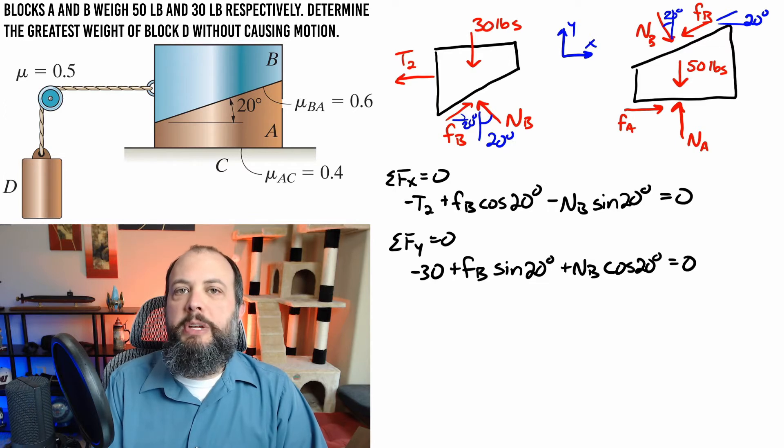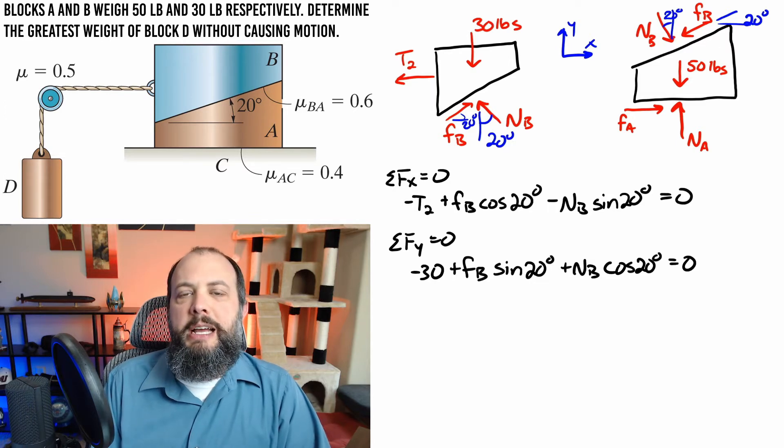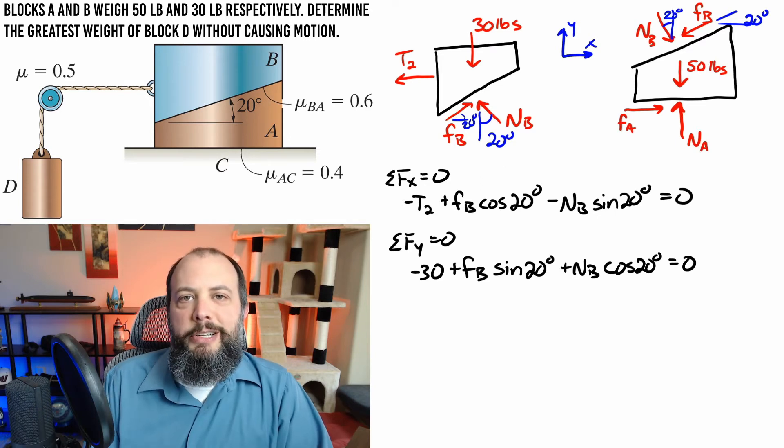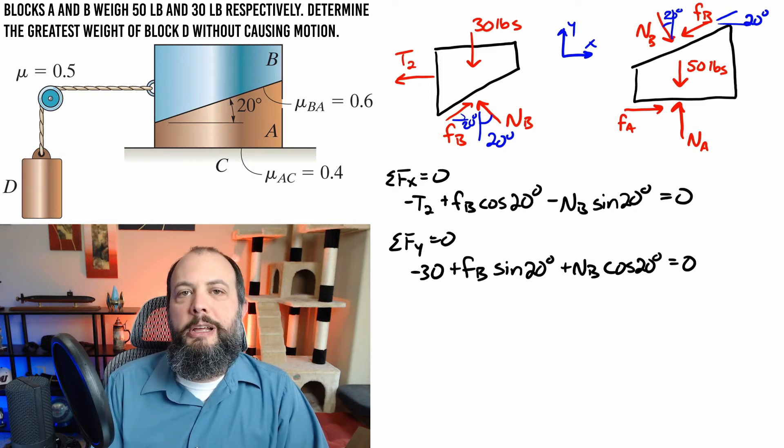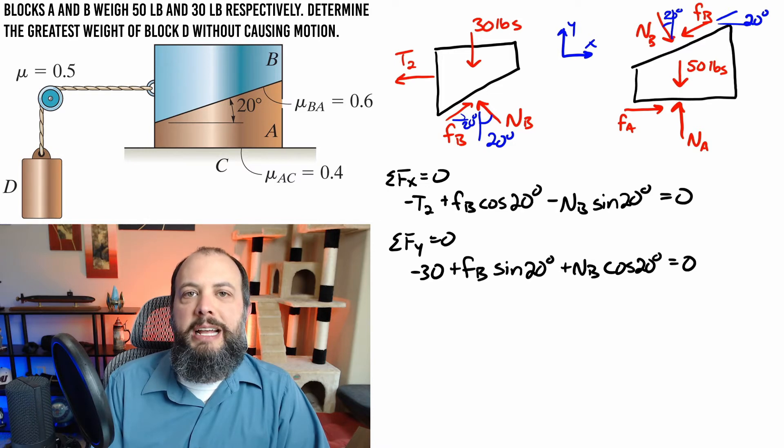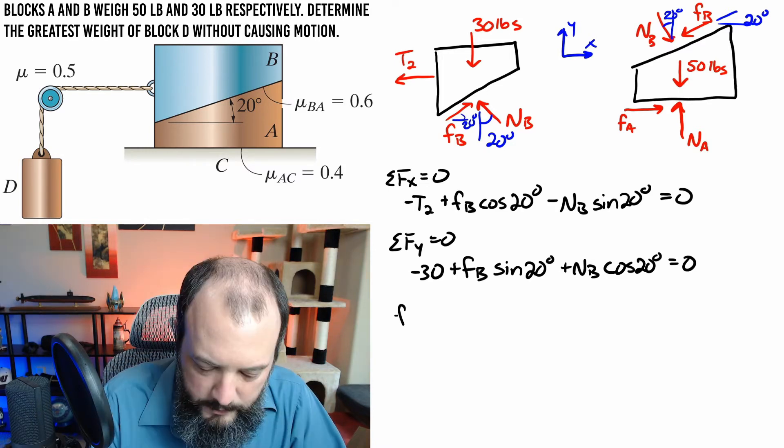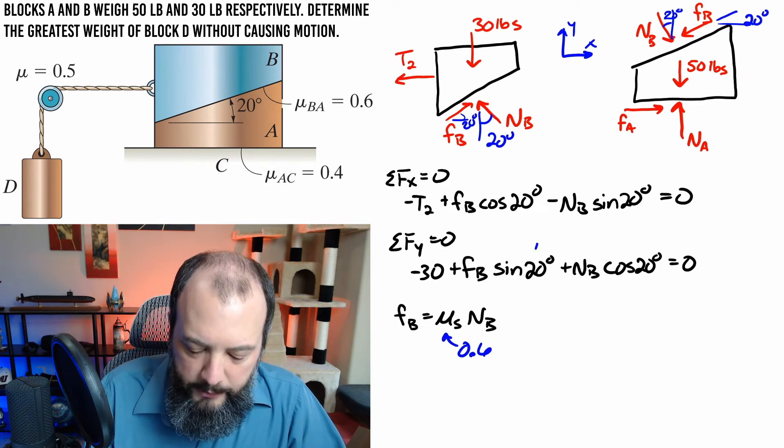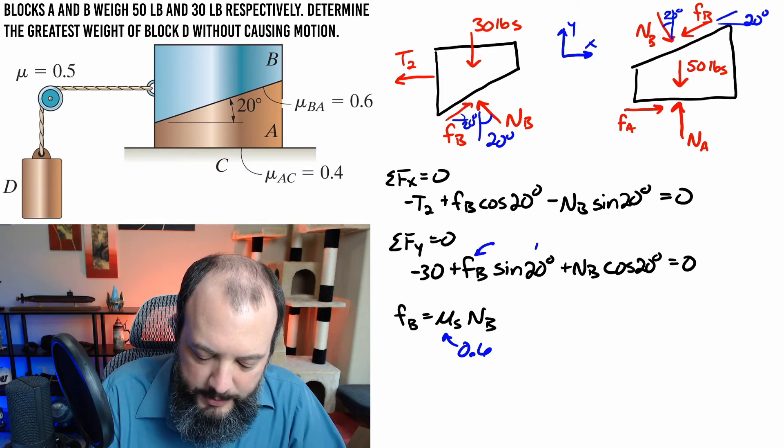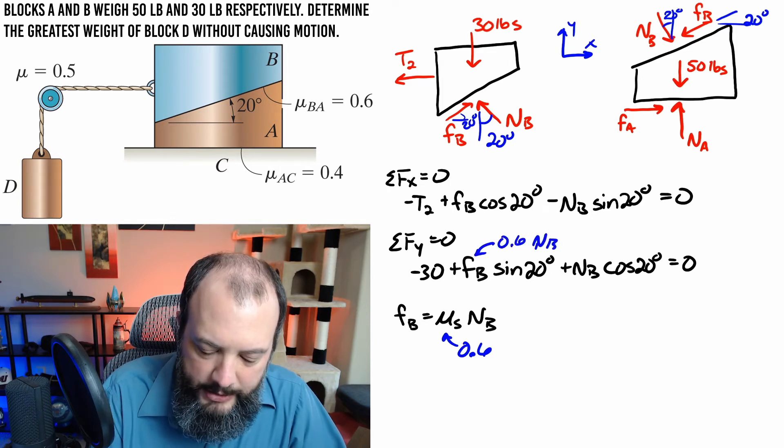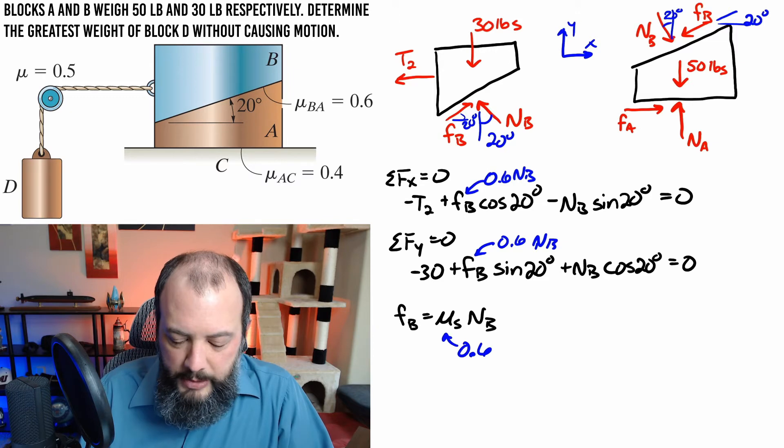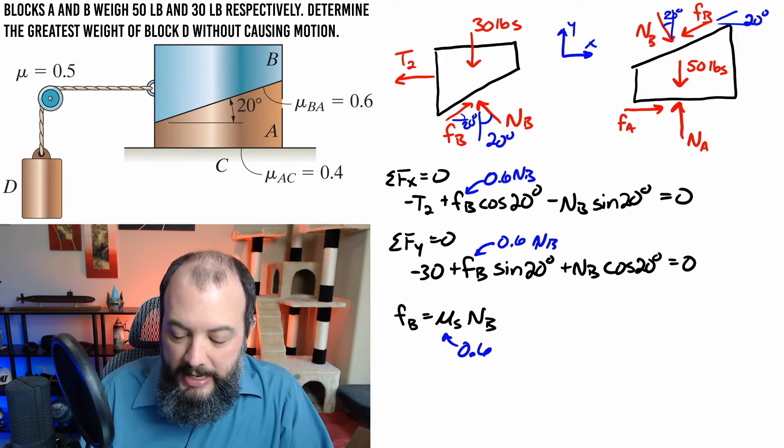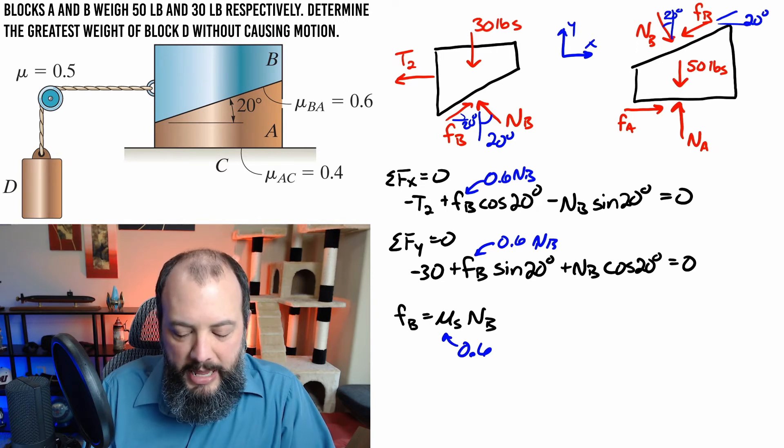I started off by writing the equations of equilibrium for the free body diagram on the left because t2 that tension is the answer that we're looking for. The left free body diagram has three unknowns on it and so far we only have two equations which is a sign that you might need another free body diagram but in this case we have the friction equation which is a relationship between friction and the normal force at that interface. Knowing that this friction force is equal to 0.6 times the normal force I can substitute that into my x and y direction equations.